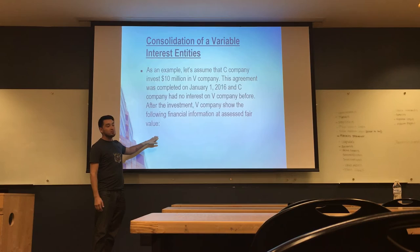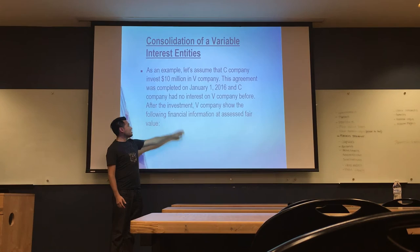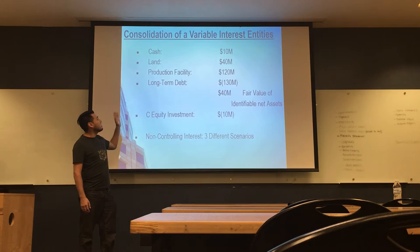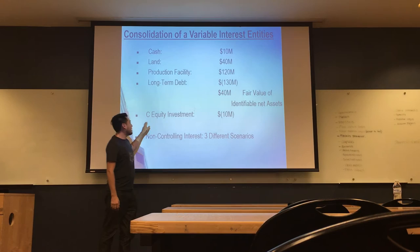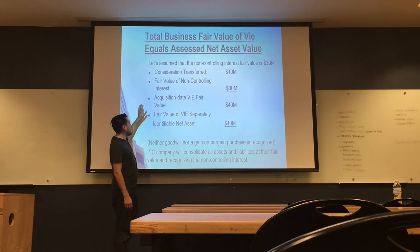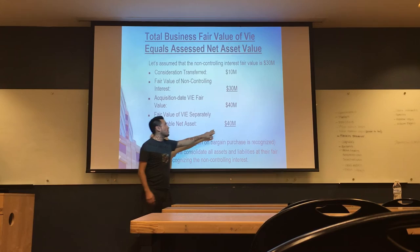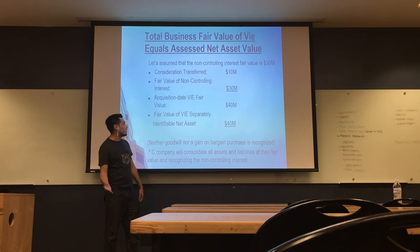Company C's equity investment is $10 million. For non-controlling interest, we'll consider three scenarios. In the first case, the fair value is $40 million and the net asset value is $40 million, with $10 million as the non-controlling interest. This produces neither goodwill nor a bargain purchase gain, so we only consolidate assets, liabilities, and non-controlling interest. In the second case, the non-controlling interest is $22 million on the acquisition date, leaving $8 million that goes to gain on bargain purchase, and we consolidate assets, liabilities, non-controlling interest, with that $8 million going to the consolidated income statement.